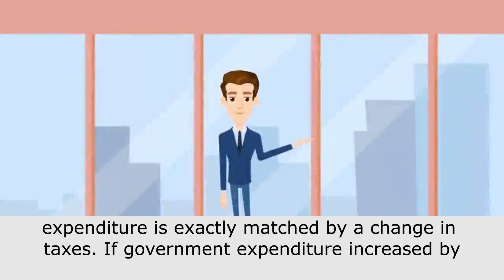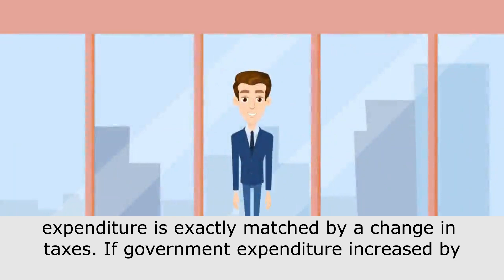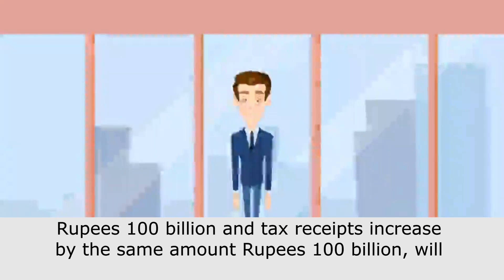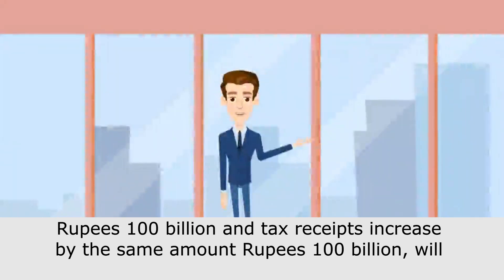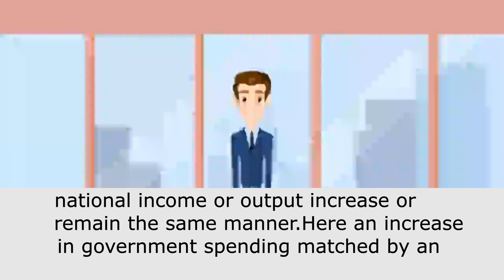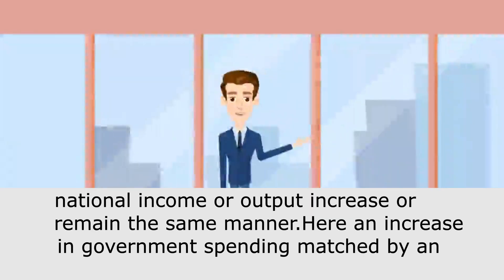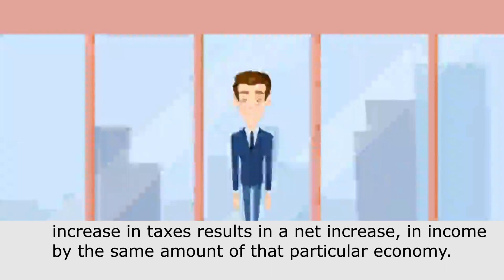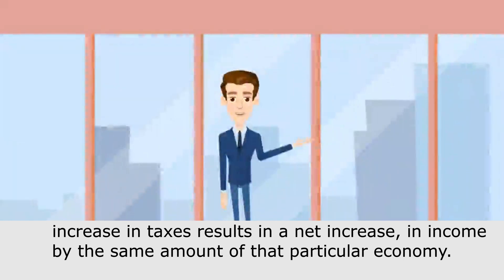If government expenditure increased by rupees 100 billion and tax receipts increased by the same amount, rupees 100 billion — will national income or output increase or remain the same? An increase in government spending matched by an increase in taxes results in a net increase in income by the same amount in that particular economy.